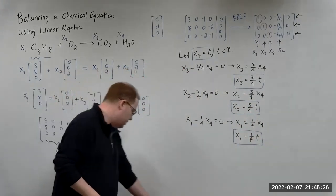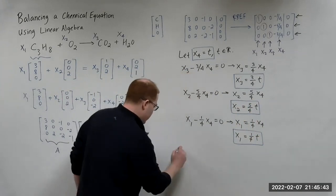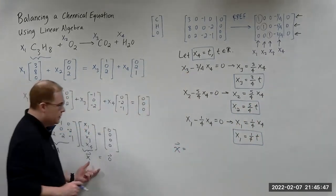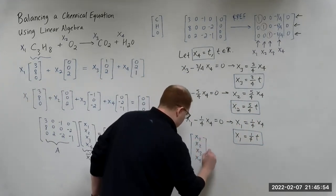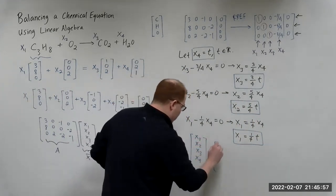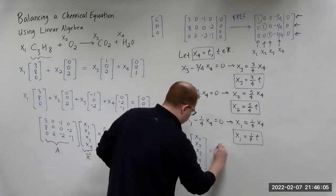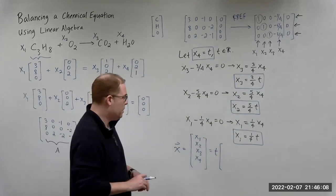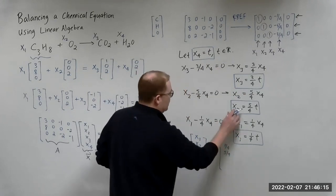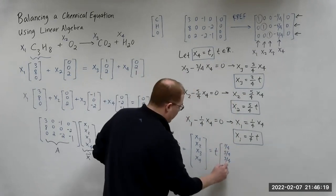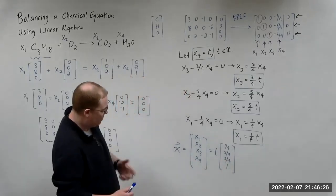From there we can write our general solution vector x = [X1, X2, X3, X4]. Factoring out t since each variable contains t, we write it in parametric form: t times [1/4, 5/4, 3/4, 1]. This gives us our general solution.